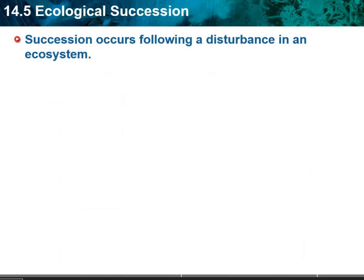We will be doing a lab on ecological succession where we're going to be going around outside the school and looking at three areas: a meadow, the edge, and the woods. We're going to see how those, if we just let them go, what would end up happening in the future.